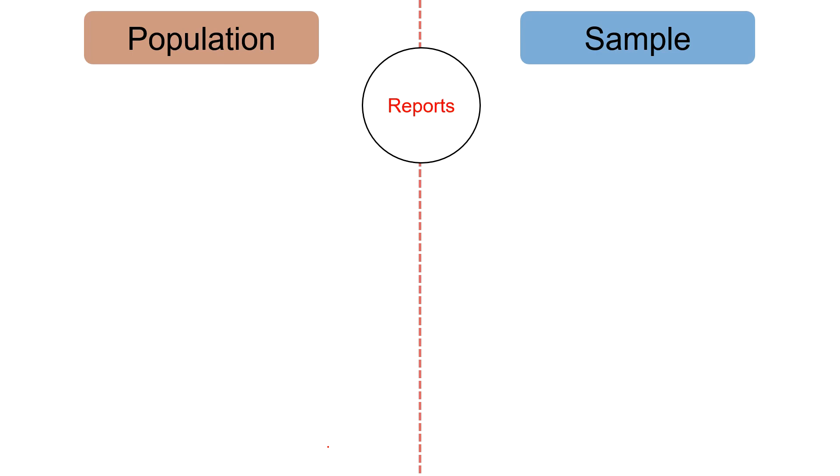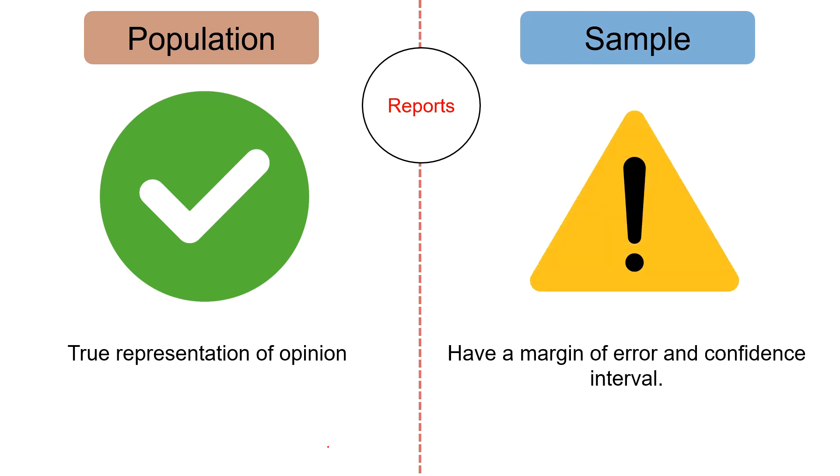Next, reports. In the case of population, reports are true representation of opinion. In contrast, in the case of sample, the reports have a margin of error and confidence interval.